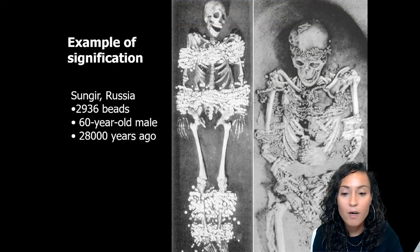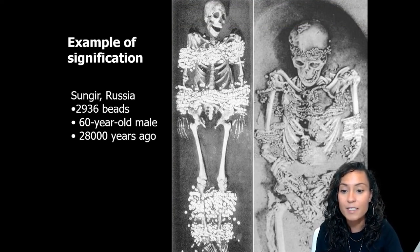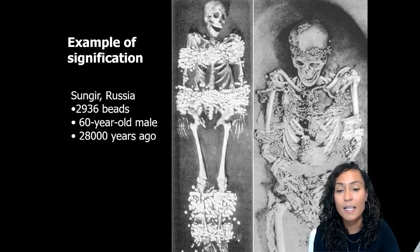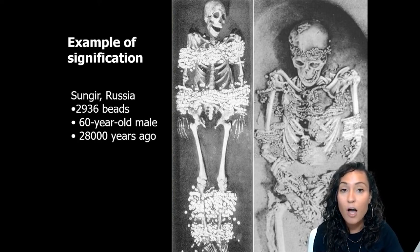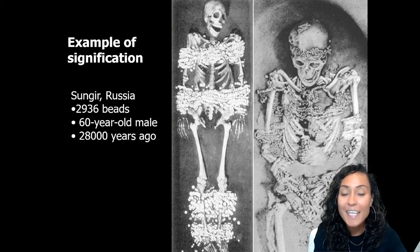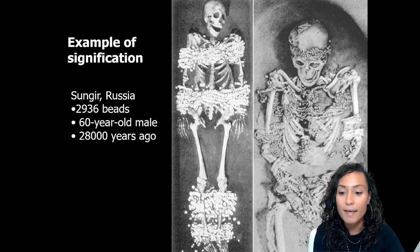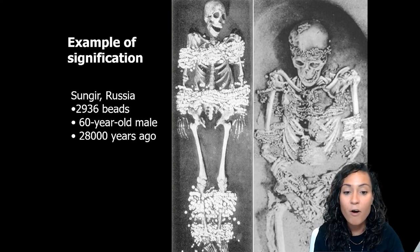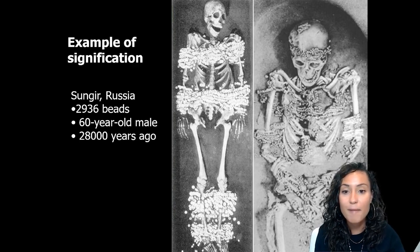One example of the use of beads, pendants, and other personal decorations comes from the Sungir site in Russia. This burial contained the remains of a 60-year-old man along with over 2,000 beads arranged in strands on all parts of the man's body. These beads were certainly decoration, but they may have also sent a social message about the status and affiliation of this buried man.